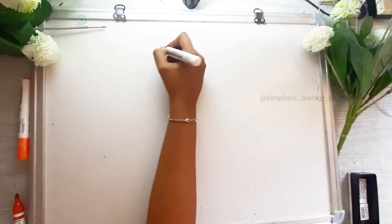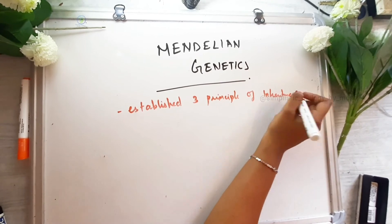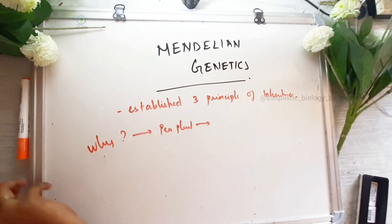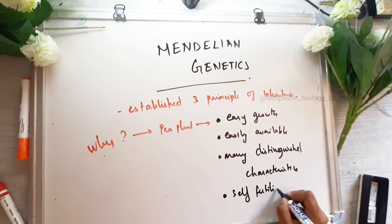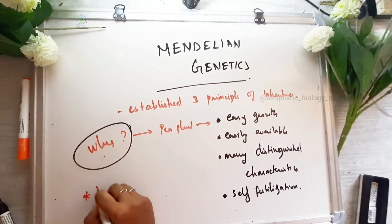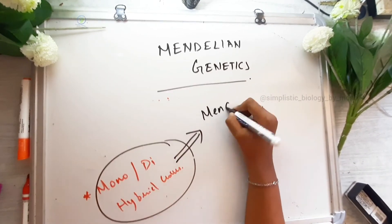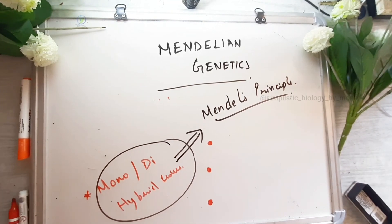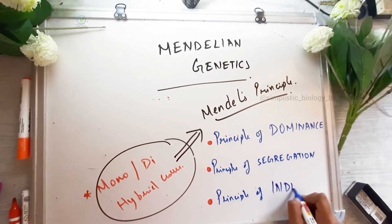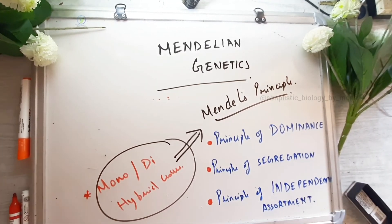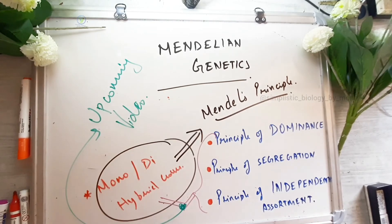Mendel established three principles of inheritance. He chose pea plants because they are easy to grow, readily available, have distinct characteristics, and are capable of self-fertilization. He performed monohybrid and dihybrid crosses using trial and error methods. The three principles are: the principle of dominance, the principle of segregation, and the principle of independent assortment. Each principle will be covered in detail in separate videos.